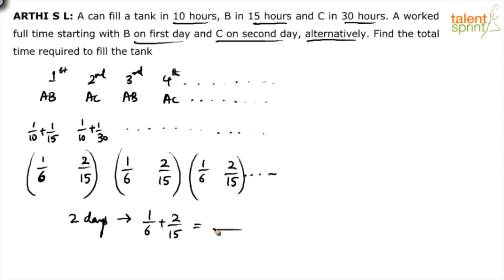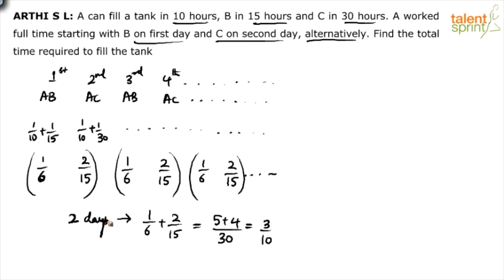In two days the amount of work done is 1/6 + 2/15. The LCM is 30, so 5 + 4 = 9/30, which is 3/10. They can do 3/10 of the work in two days — that's 30% of the work in two days.